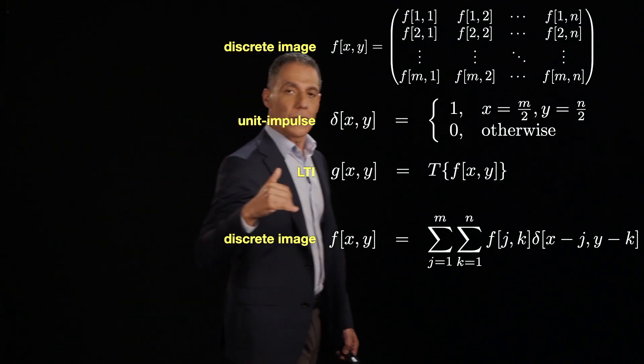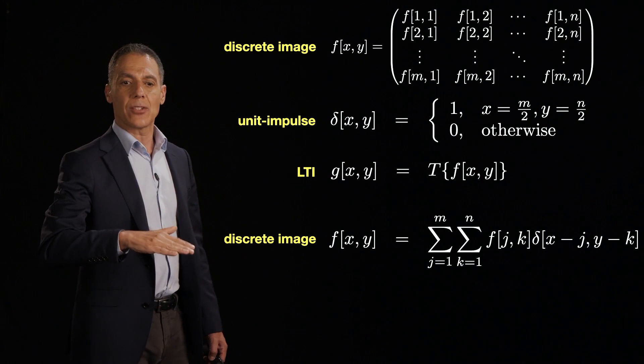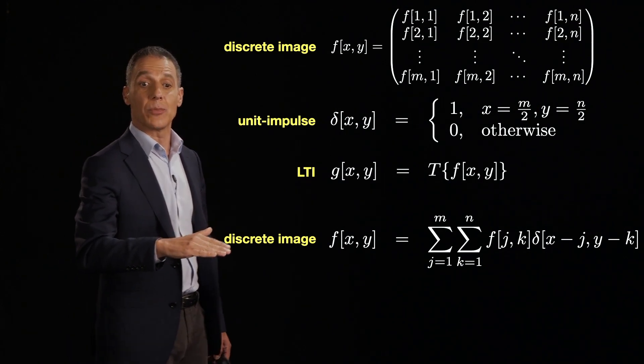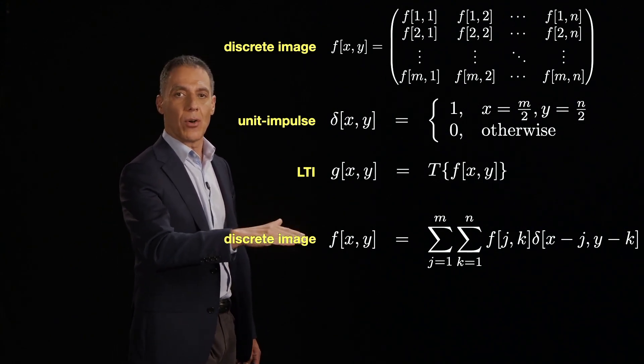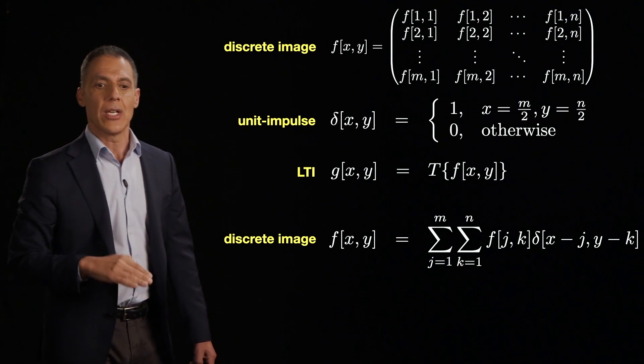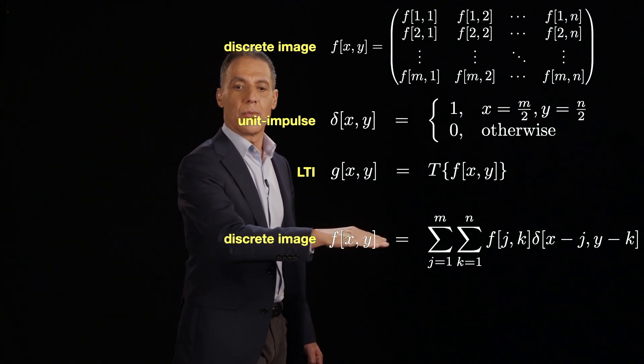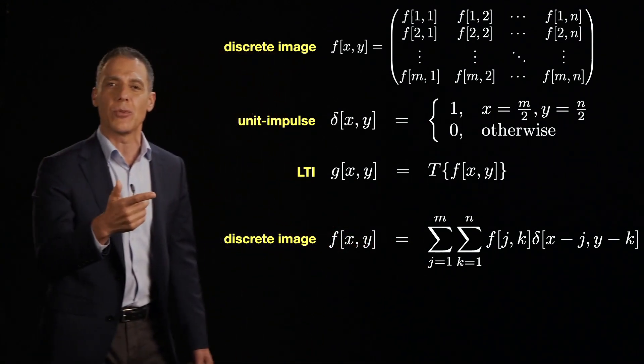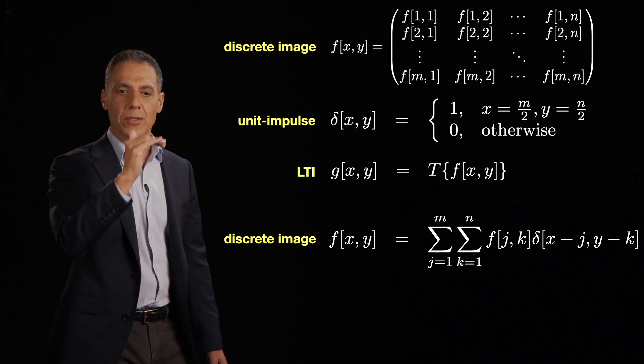So now we have our linear time invariant systems in 2D. Now let's look at that same representation of a discrete image in terms of scaled and sum unit impulses, now 2D impulses. So I think we can agree that any image f[x,y] can be written now as a double sum. And now, by the way, my sums aren't minus infinity to infinity because I have a discrete lattice from 1 to M and 1 to N.